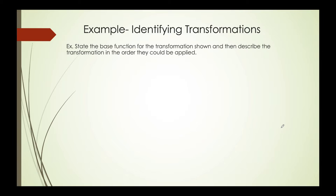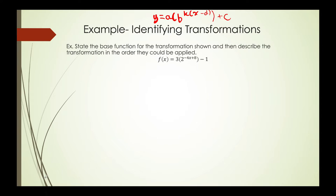Now let's look at an example. Suppose we are given this exponential equation and we want to find out what the transformation looks like. The first thing I would do is compare it to the general transformation form: a times b to the power of k times, then in brackets, x minus d, plus c. We should be comparing the variables in this equation with the variables in the general transformation.